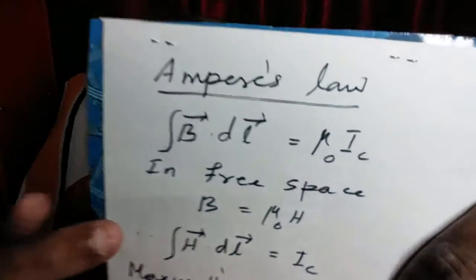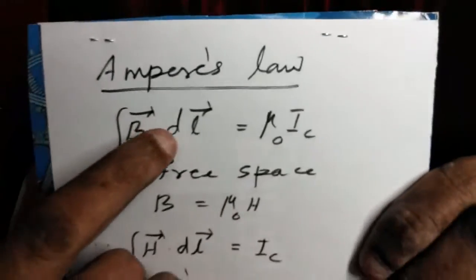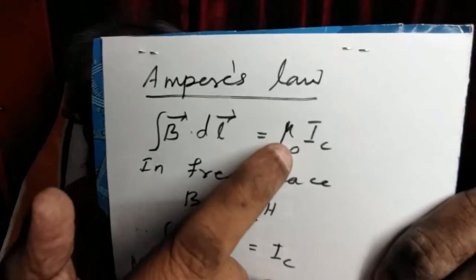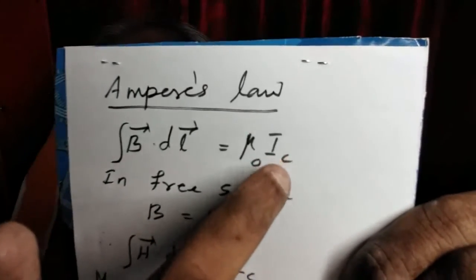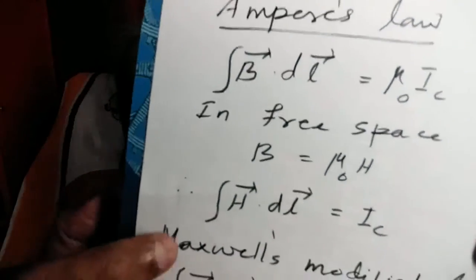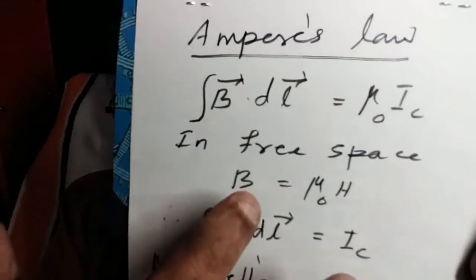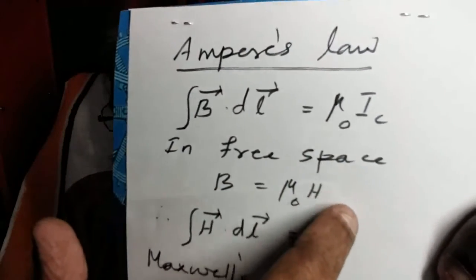Maxwell modified Ampere's law by including displacement current. Ampere's law for steady current is: the integral of B dot dL is equal to mu zero times IC, where IC is the conduction current. In free space, B equals mu zero times H, where H is called the intensity of the magnetic field, expressed in ampere per meter.